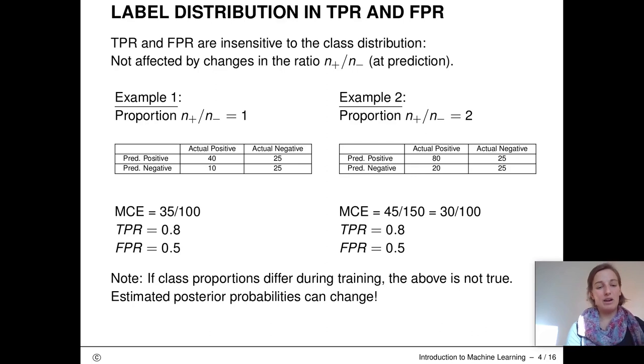The ROC measures, true positive rate and false positive rate are the same for both examples. The reason for this is that they are computed as rates. This is a nice property and these measures help us avoid confusion in settings with unbalanced samples.